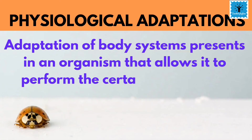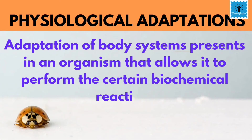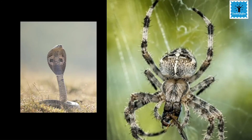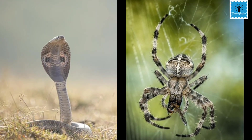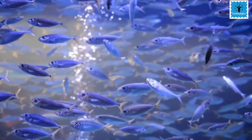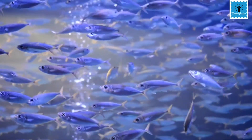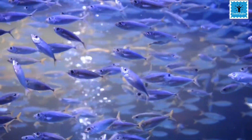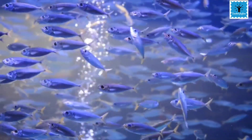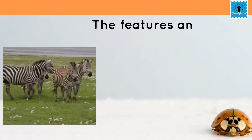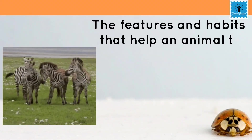Physiological adaptations are how the animal's body functions on the inside. It includes changes in the cell and biochemical processes within an animal's body. For example, snakes and spiders produce venom to paralyze their prey, which makes the prey easier to digest. Also, many fish and reptiles are cold-blooded, which helps them to live in cold water environments.